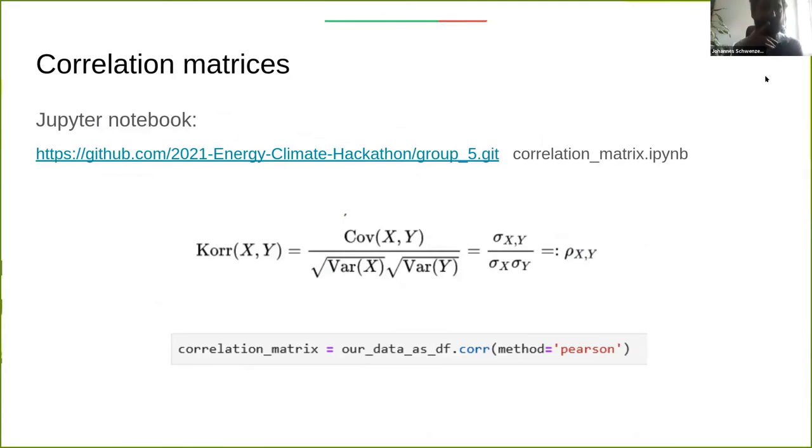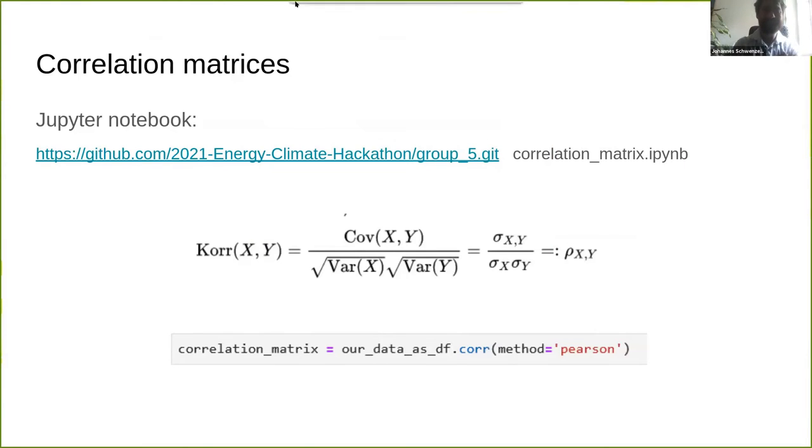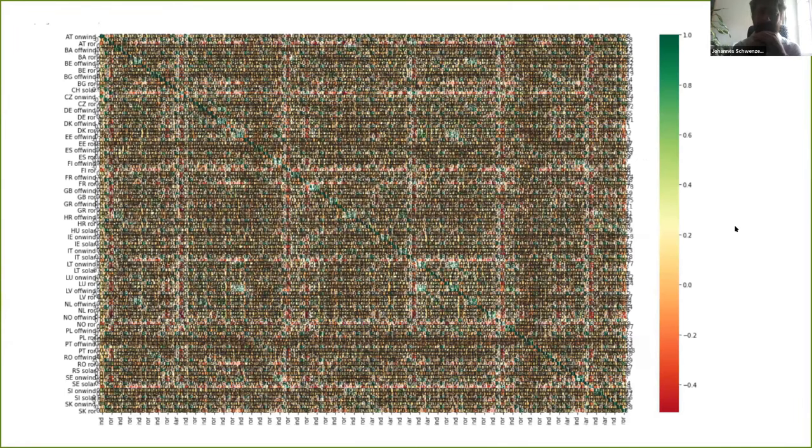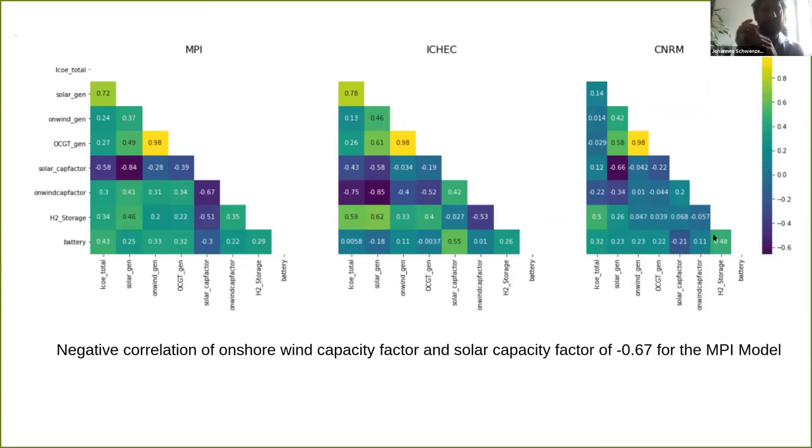One more metric we used was the correlation, and a very nice way to visualize this is with correlation matrices. I wrote a notebook that constructs those and it's included in our GitHub repository. When I did that first for each energy model, I ended up with a not very comprehensive matrix. So after grouping it per energy carrier we got this matrix, which still contains a lot of useless information. After narrowing it down again, we end up with these matrices.